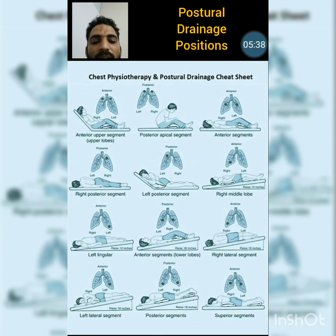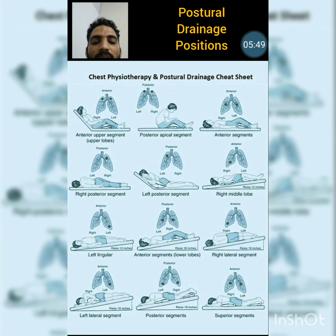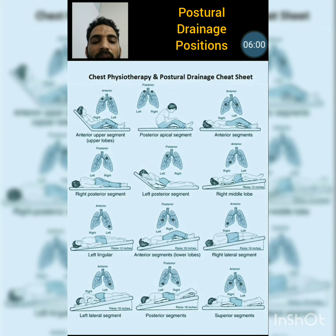Last is the superior segment removal technique. The patient is lying in the prone position with support just below the right abdominal-thoracic area and a towel roll under the tibia or shin bones. The therapist provides percussion around the rhomboid major and minor area.